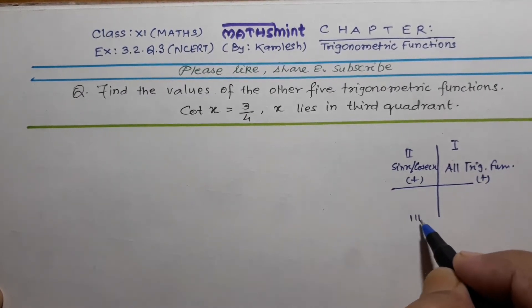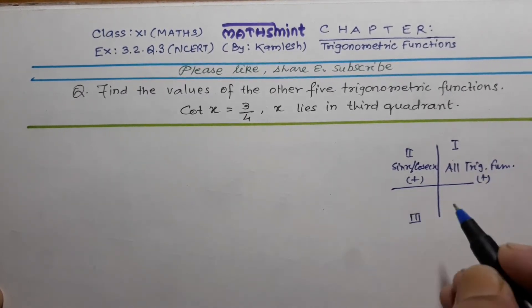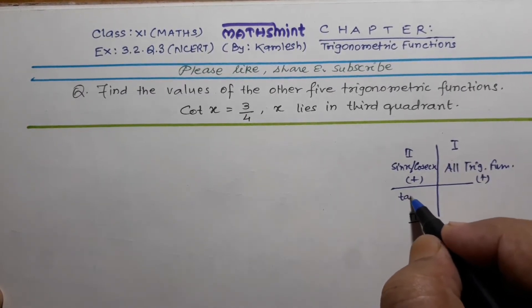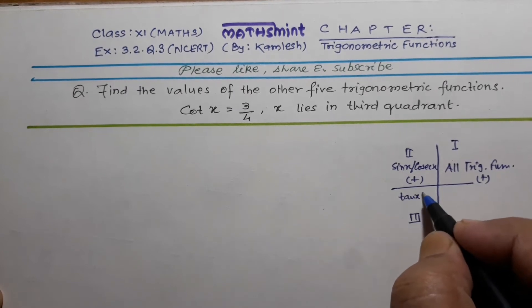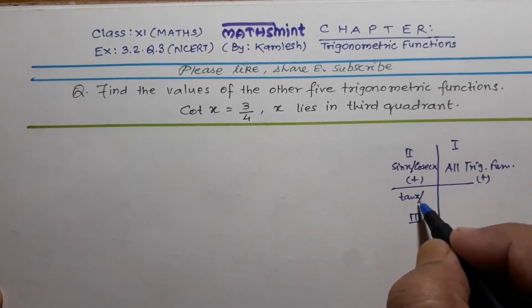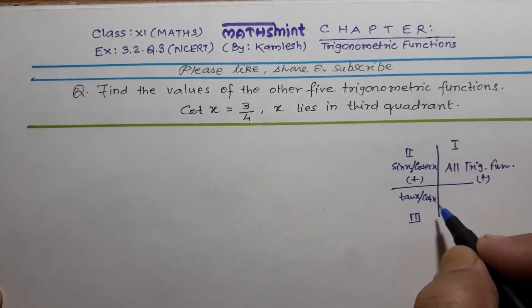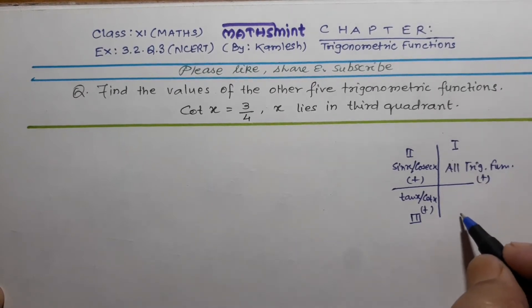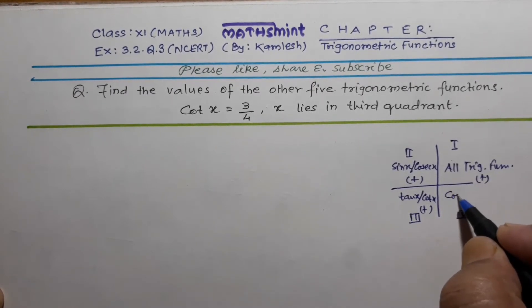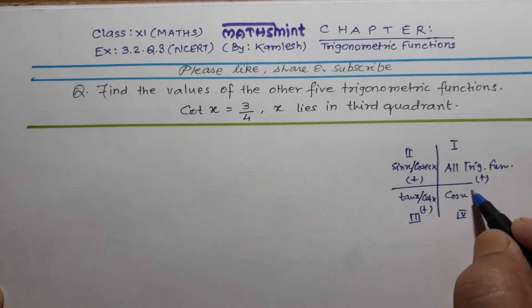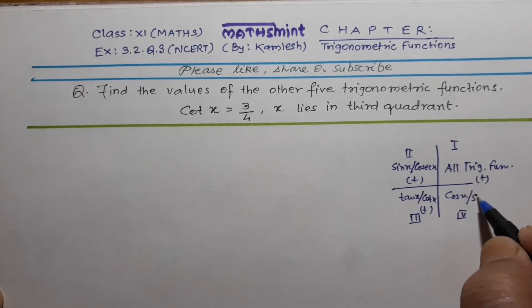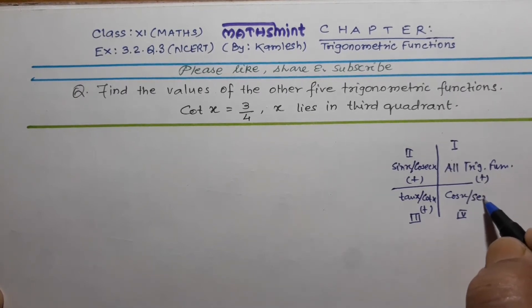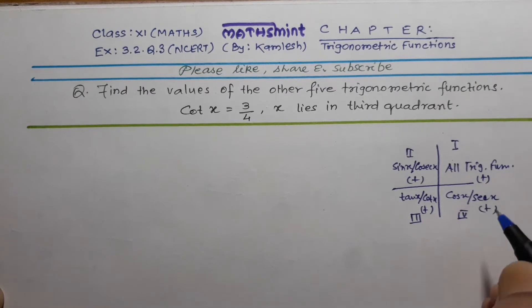In the third quadrant, tan and its opposite cot will be positive. And in the fourth quadrant, cos and its opposite sec will be positive.